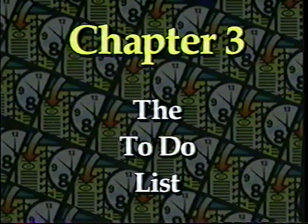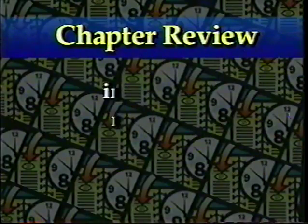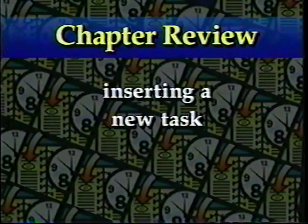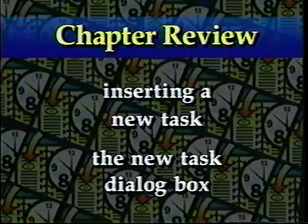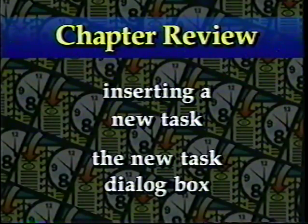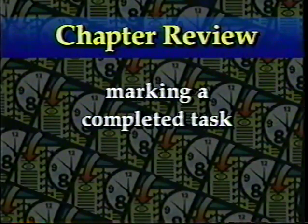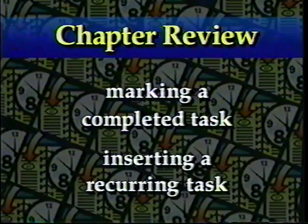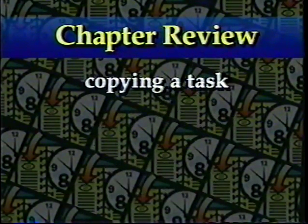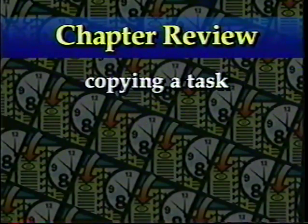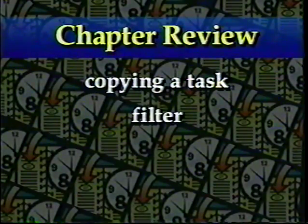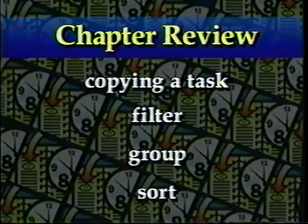Let's take a moment to review what we've covered in Chapter 3. We learned how to insert a new task into the to-do list using the Insert New Task button and the task dialog box. Then we learned how to mark a task as complete. We learned how to insert a recurring task from the Insert menu. We learned how to copy a task directly from the to-do list to the appointment book. And we learned how to change the appearance of the to-do list using the filter, group, and sort features.